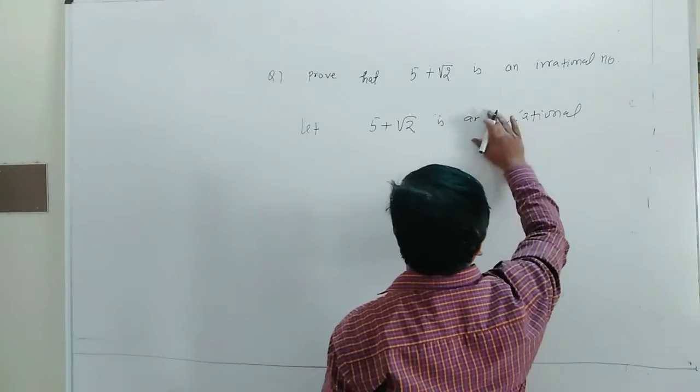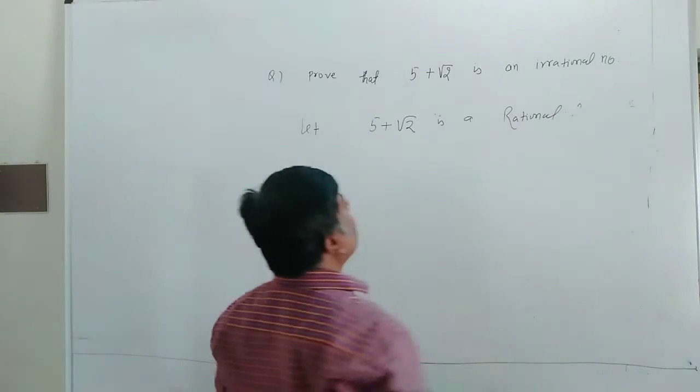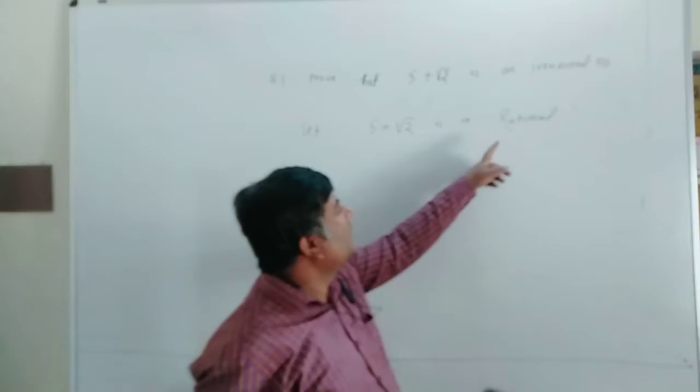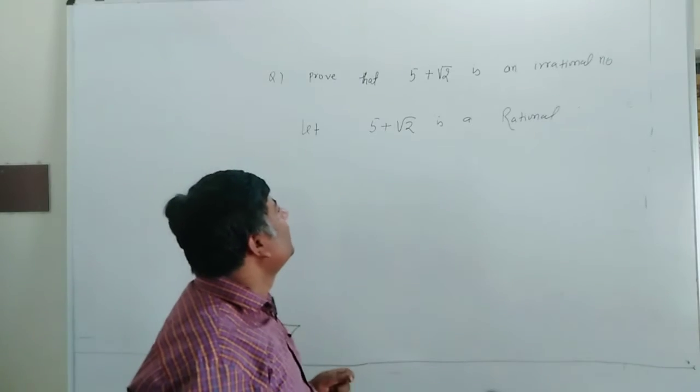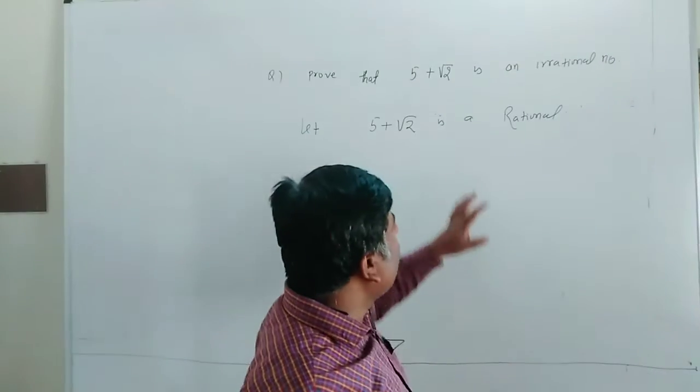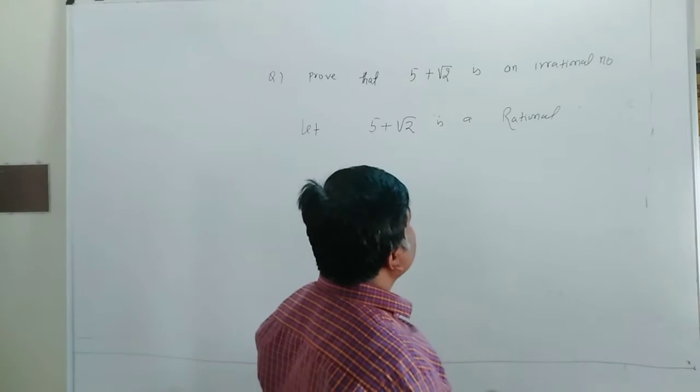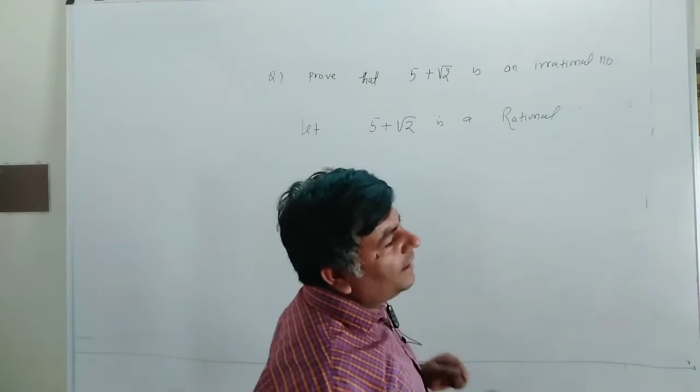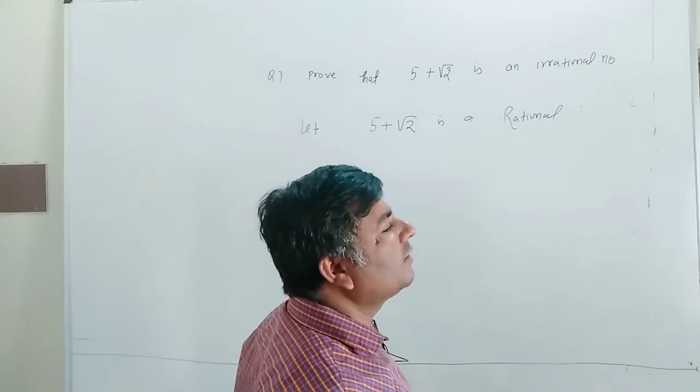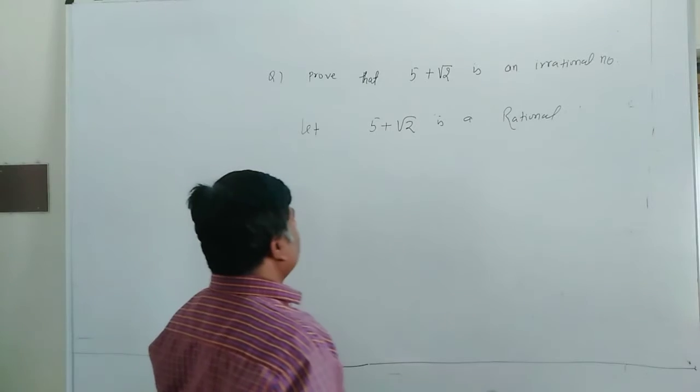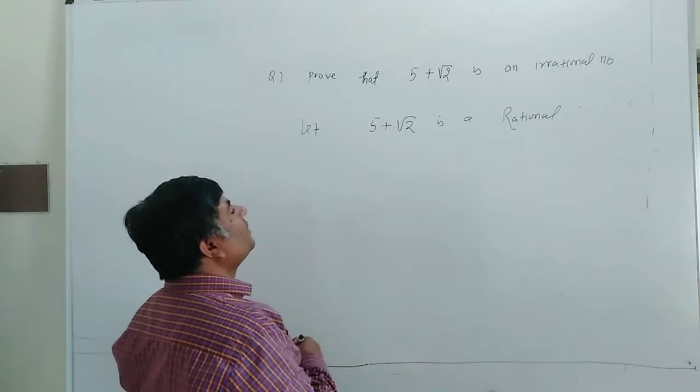We need to prove this is an irrational number. We will use the contradiction method, assuming it is rational. When you apply the rational method and make the assumption rational.